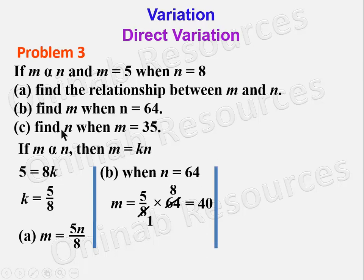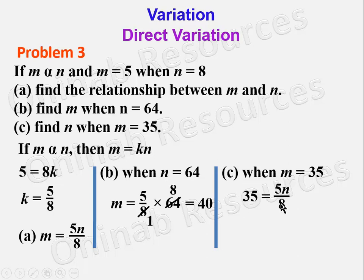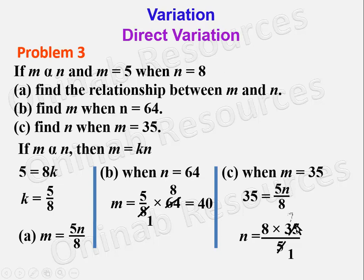For part (c), find N when M is 35. When M is 35, that means 35 will be equal to 5N over 8. Cross multiplying and making N the subject of the formula, we have N as 8 times 35 over 5. 35 divided by 5 gives 7, and 7 times 8 gives 56. So N is equal to 56 when M is 35. We are done with problem 3.